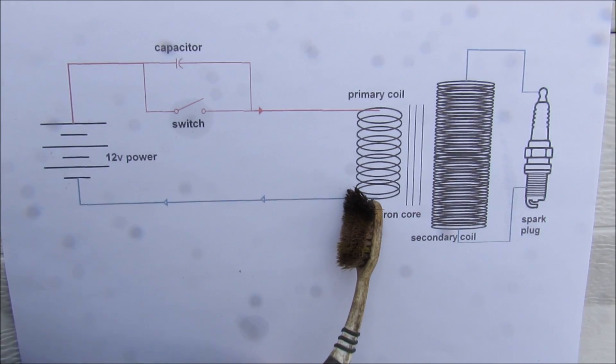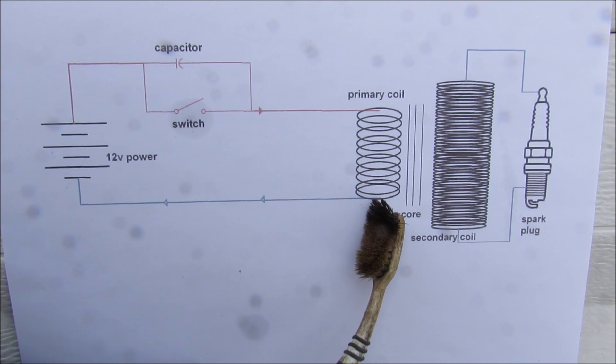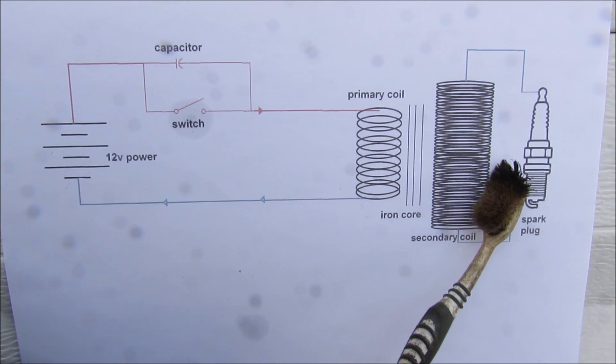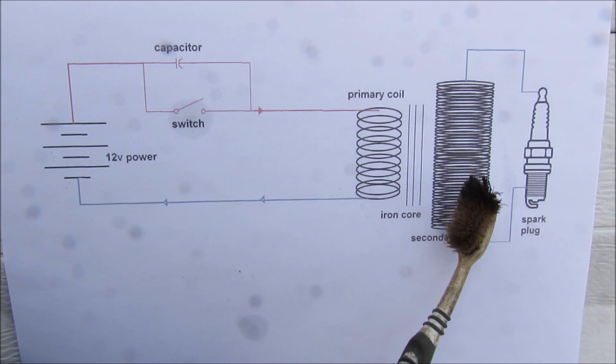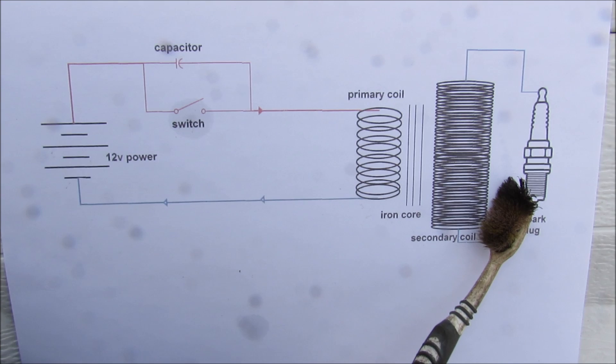Now when 12 volts powers up the primary coil which is wrapped around the secondary coil which is wrapped around an iron core, through the principle of electromagnetism it's going to induce the voltage on the secondary coil across the spark plug. Now the voltage is induced just when the switch is turned on it's not enough to jump the spark plug gap to create a spark.